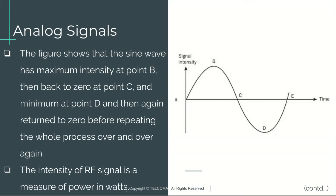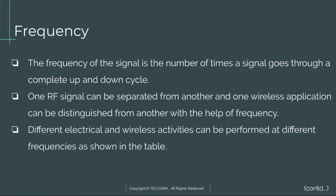This figure shows that the sine wave has maximum intensity at point B, then back to zero at point C, minimum at point D, and then returns to zero before repeating the whole process over and over again. The intensity of an RF signal is a measure of power in watts.